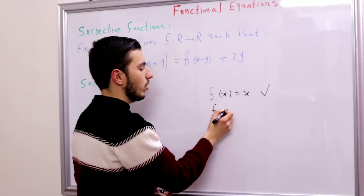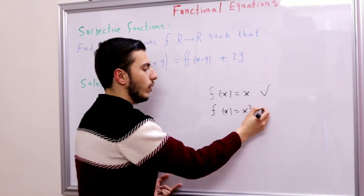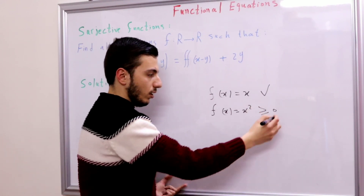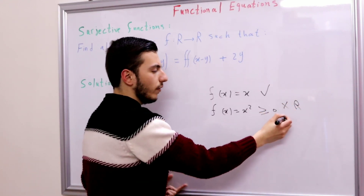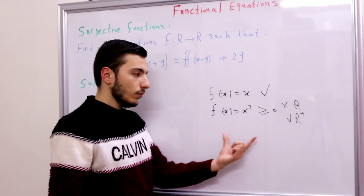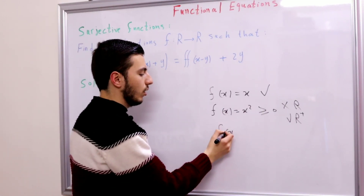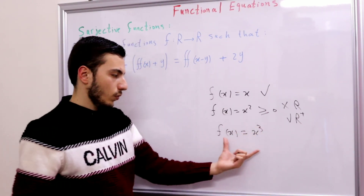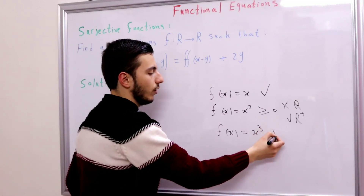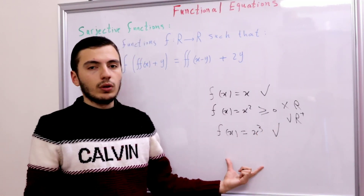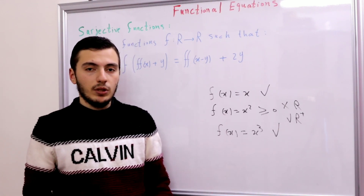What about f(x) = x²? Well, this is greater than or equal to zero, so it's not subjective on R, but it is subjective on R⁺. What about f(x) = x³? This can take any real number, so it is subjective. So we call a function subjective on R when it covers all real numbers.